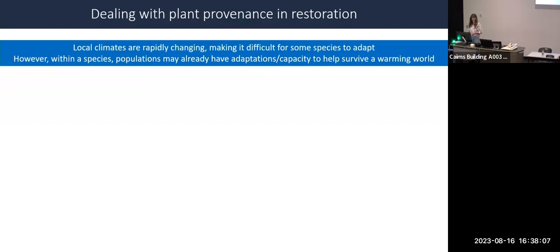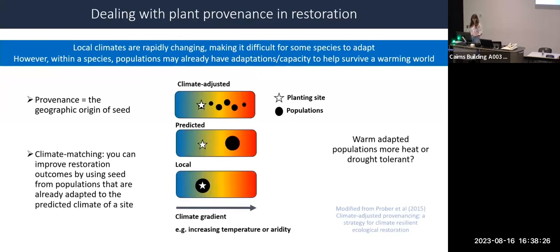Populations can have different tolerances and different strategies across their environment, so you may already have some populations adapted or with the adaptive capacity to survive in a warming world. I'd like to introduce the idea of provenance - the geographic origin of seed. Often in tree planting a local provenance strategy is used, sourcing seed local to the planting site. However, since climate is warming, the climate of that site is expected to increase in temperature or aridity. We can then source seed from warmer climates within a species' distribution to aid restoration efforts considering temperatures are changing - this is climate matching.